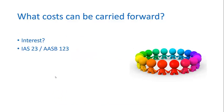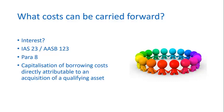Interest may also be able to be carried forward in certain circumstances. If you're constructing an asset yourself, interest costs incurred during the construction phase might be considered part of the cost of the asset. This is addressed in IAS 23, AASB 123, which is very much a supplement to IAS 16. Paragraph 8 allows for the capitalisation of borrowing costs directly attributable to the acquisition of a qualifying asset — expanding the type of costs that might be carried forward as property, plant and equipment.